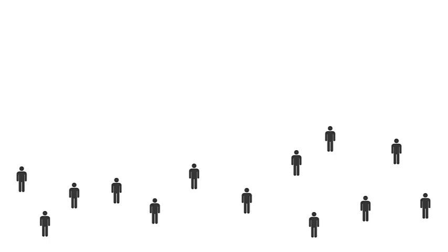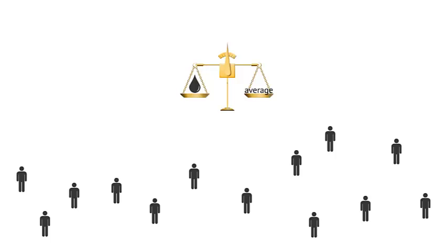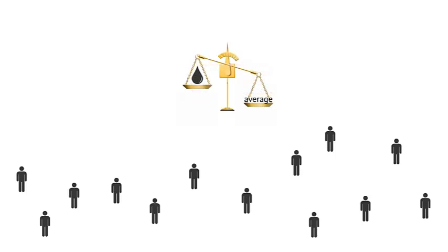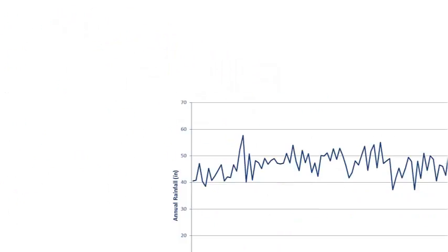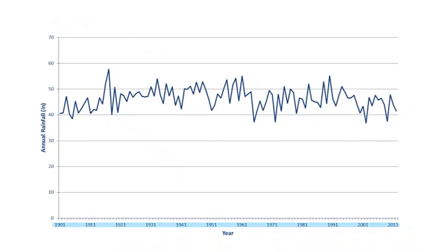Another way around adverse selection is index insurance, a type of insurance where everyone is insured based on an easily measured event that is outside their control. One example of index insurance is rainfall insurance. For instance, if the rainfall in a particular year is lower than average, everyone with insurance gets the same payout. Because there is a long record of rainfall measurements, insurers face a known risk and don't need to know the riskiness of a particular customer.